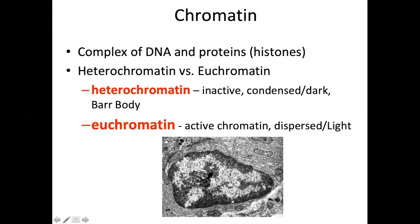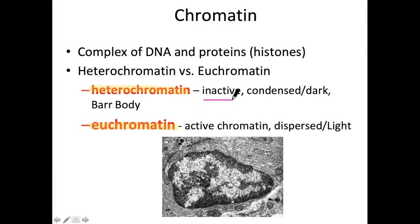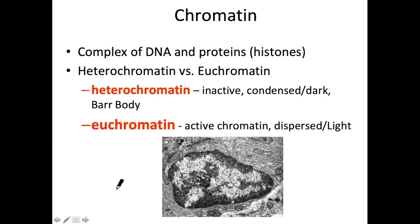Chromatin is found in the nucleus and is a complex combination of DNA and proteins called histones. There are two types: heterochromatin and euchromatin. Heterochromatin is inactive — microscopically it is condensed and dark; this is your famous Barr body. Euchromatin is active chromatin — microscopically it appears dispersed and light colored.